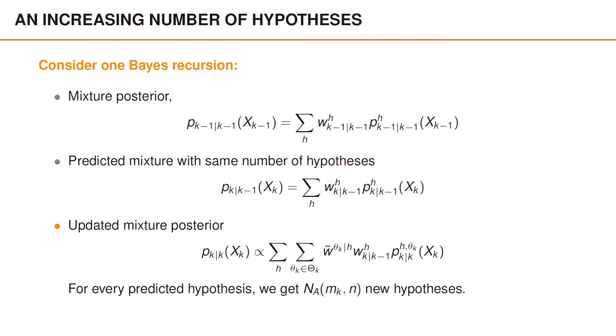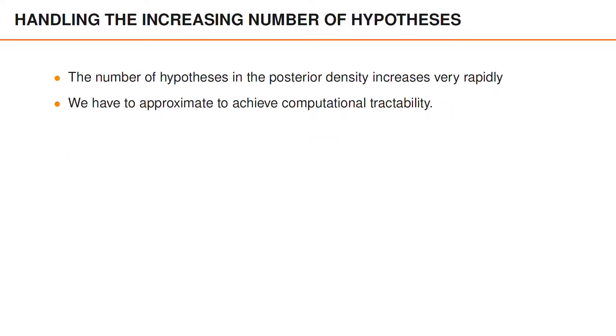For each predicted hypothesis we get several new hypotheses due to the data association. The number of hypotheses in the posterior density increases very rapidly, and we need some form of approximation to achieve computationally tractable tracking algorithms.